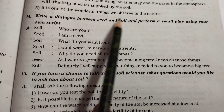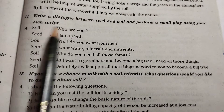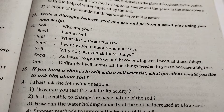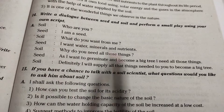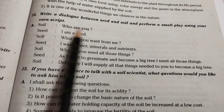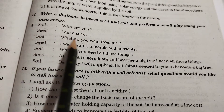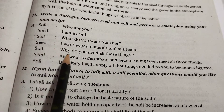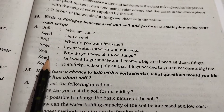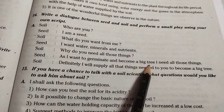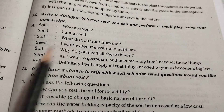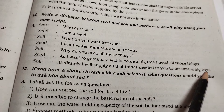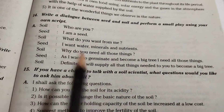Fourteenth one: Write a dialogue between seed and soil to perform a small play using your own script. Here is an example you can use or modify. Soil: Who are you? Seed: I am a seed. Soil: What do you want from me? Seed: I want water, minerals, and nutrients. Soil: Why do you need all those things? Seed: As I want to germinate and become a big tree, I need all those things. Soil: Definitely, I will supply all those things needed for you to become a big tree.